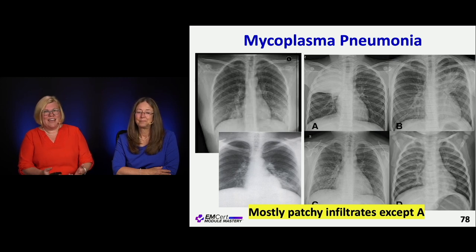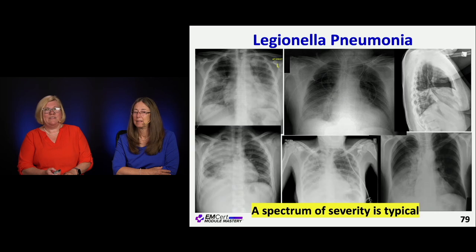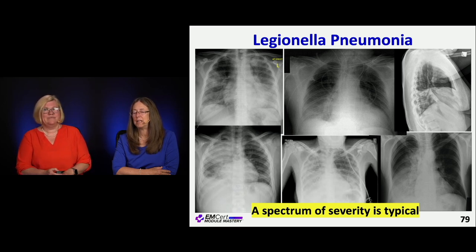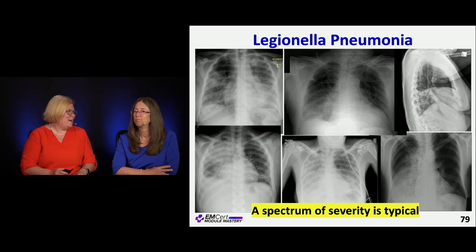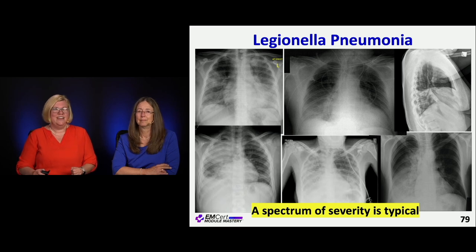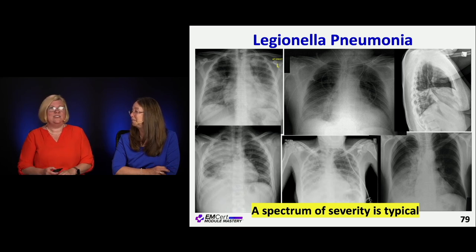Mycoplasma can look many different ways on chest X-ray — usually patchy infiltrates. Legionella has a spectrum of severity; they may have altered mental status and GI symptoms or just the pneumonia component. The key point about chest X-rays is it's really hard to tell the organism from the image. The correlation between pattern and organism is not 100% by any stretch. For test questions, they'll give you many other clues beyond the chest X-ray to point you toward the diagnosis.